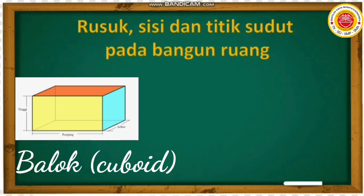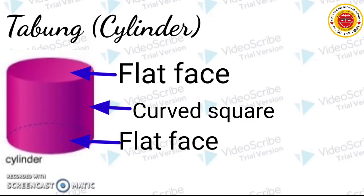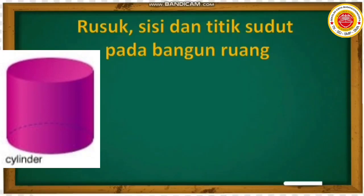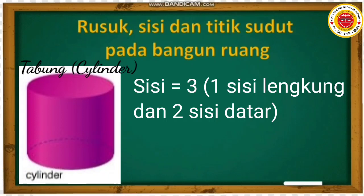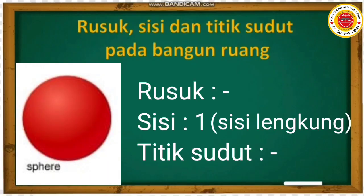Sekarang kita ke bangun ruang yang lain yang namanya balok atau kuboid. Kuboid ini sama ya, mempunyai rusuk dua belas, sisinya ada enam, dan titik sudutnya ada delapan. Tabung atau silinder memiliki tiga sisi, three faces: satu curved face dan dua flat face. Tabung memiliki tiga sisi yang terdiri dari satu sisi lengkung dan dua sisi datar. Sekarang bola atau a sphere: bola tidak memiliki rusuk dan titik sudut, hanya mempunyai satu sisi lengkung.